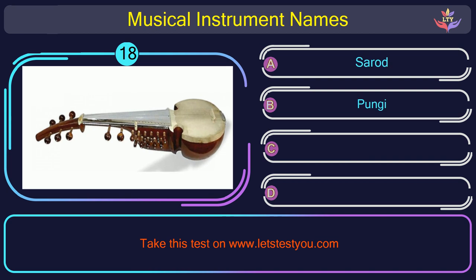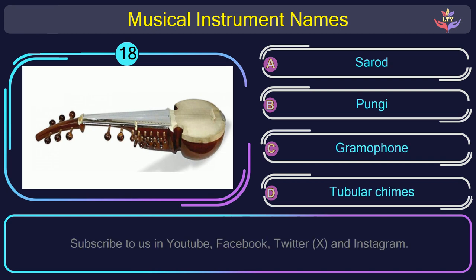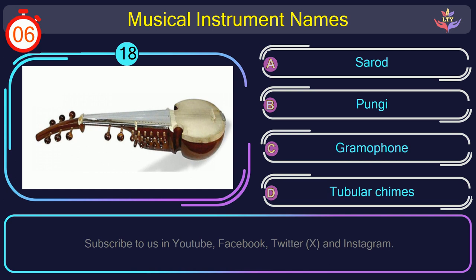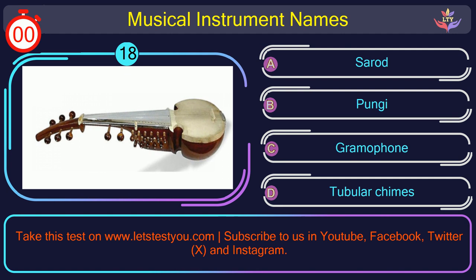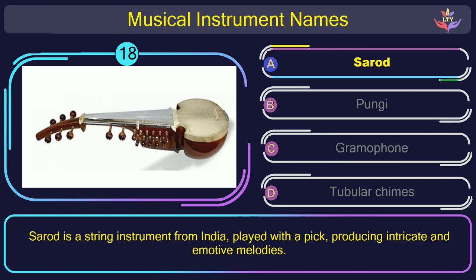Question number 18. Can you name the musical instrument you see in this picture? The correct answer is option A: Sarod. Sarod is a string instrument from India, played with a pick, producing intricate and emotive melodies.